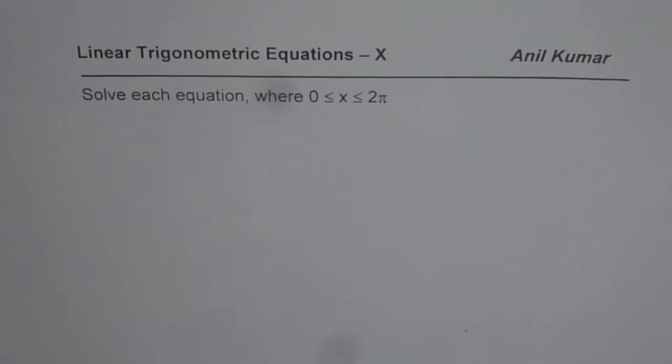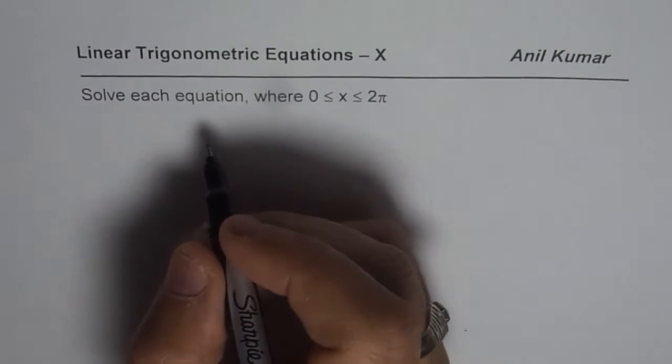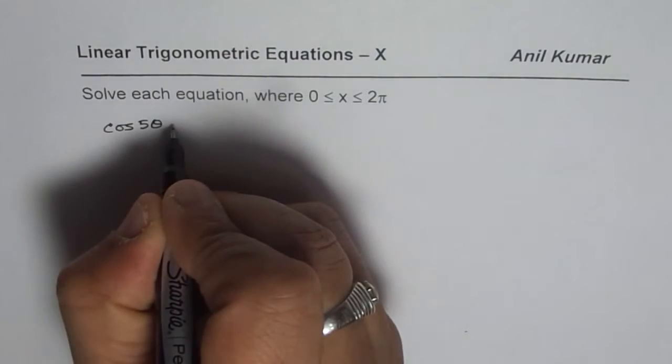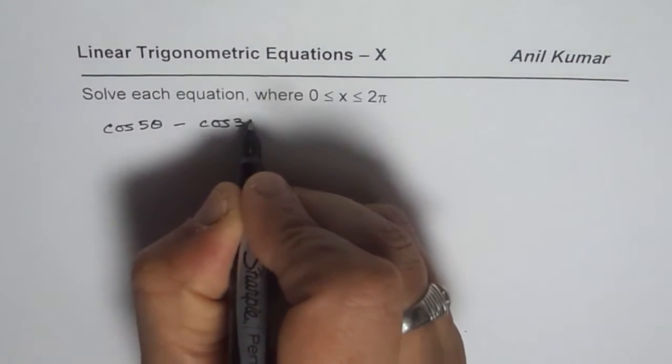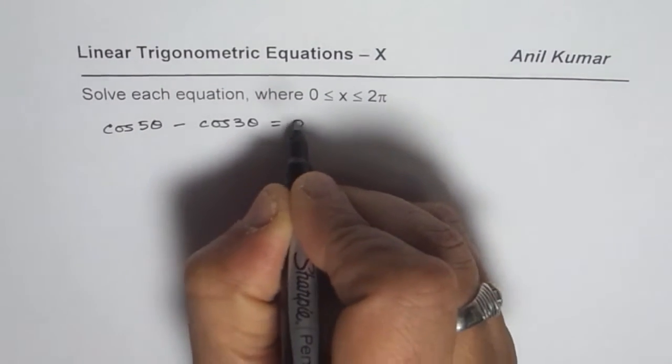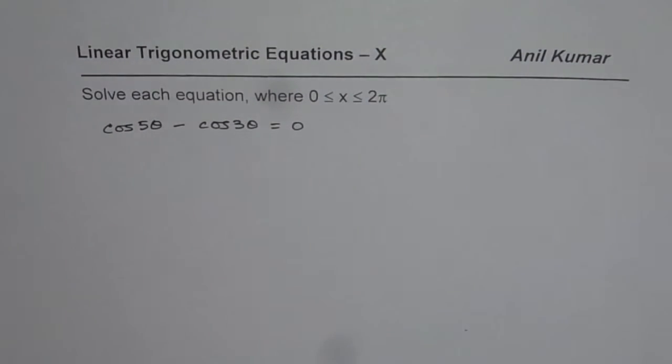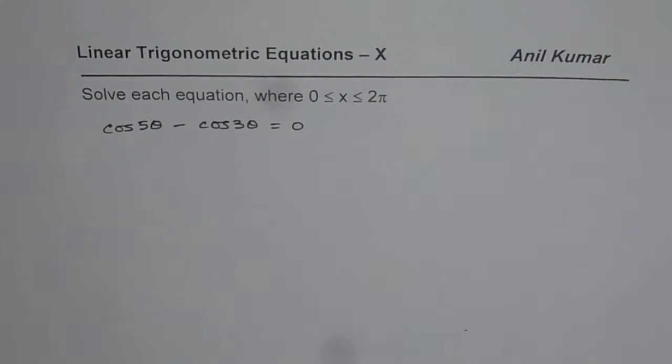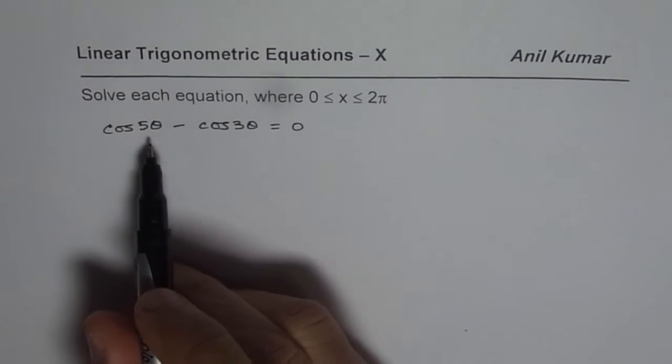I'm Anil Kumar and in this video I'll solve a very interesting trigonometric equation using compound angle formulas. Let's take the example cos 5θ minus cos 3θ equals 0. Those who know the sum to product formula can use it directly, but the normal solution involves application of compound angle formulas.